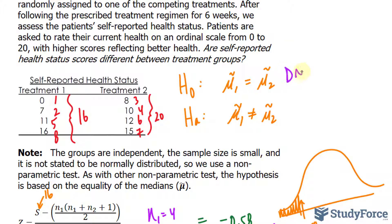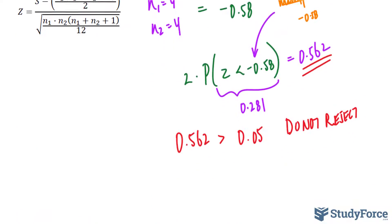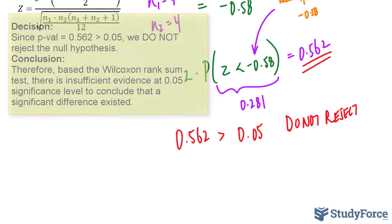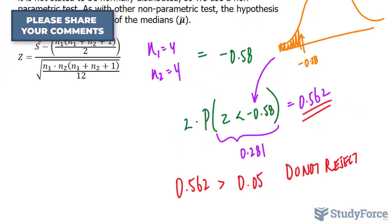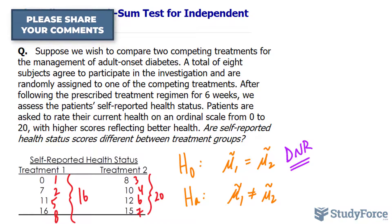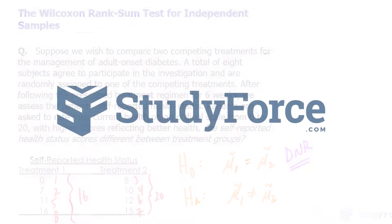To conclude in a formal way: based on the Wilcoxon rank sum test, we have insufficient evidence at the 0.05 significance level to say a significant difference between the two treatments existed. And that is how to perform the Wilcoxon rank sum test for independent samples.